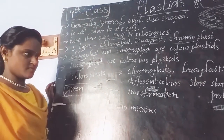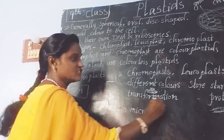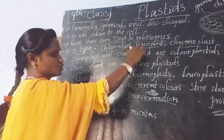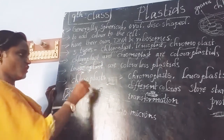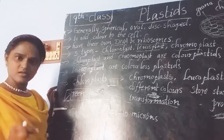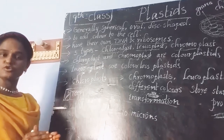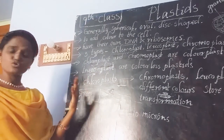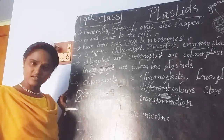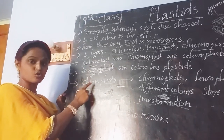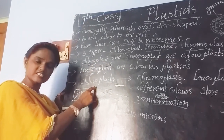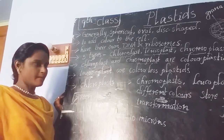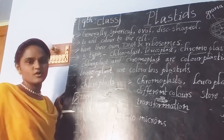Chromoplast gives different colors to the plant through the transformation of chloroplast and leucoplast — these two together transform to form chromoplast. The main function of chloroplast is that it is the key plastid in the plant, essential for performing photosynthesis. If there is no chloroplast, there is no chlorophyll, and the plant is unable to trap sunlight. Chloroplast traps sunlight and transforms that light energy into chemical energy, enabling the plant to perform photosynthesis.